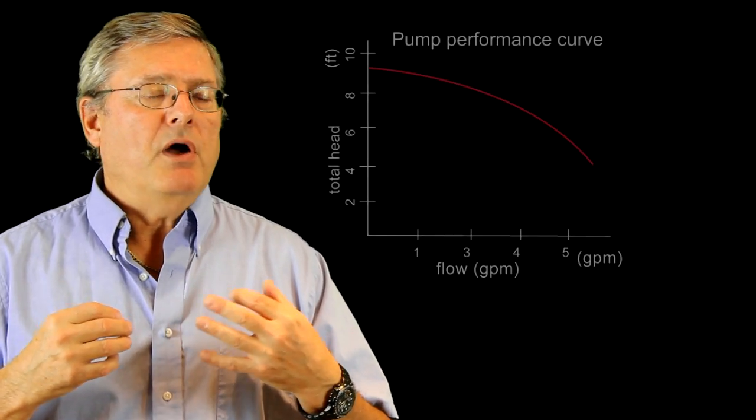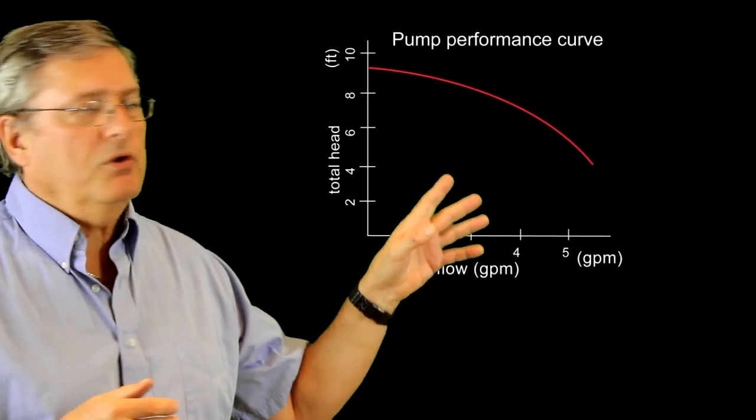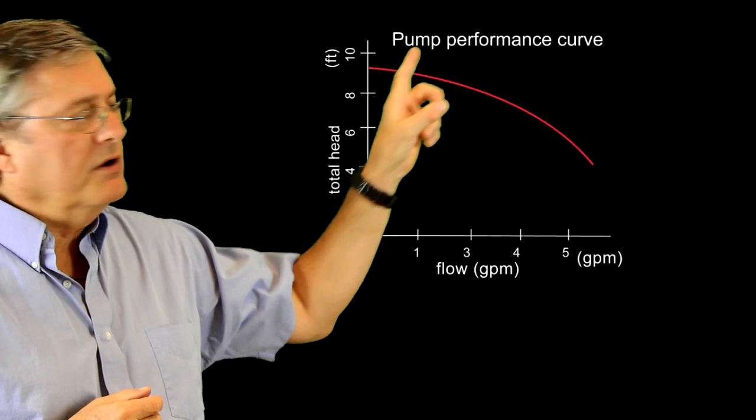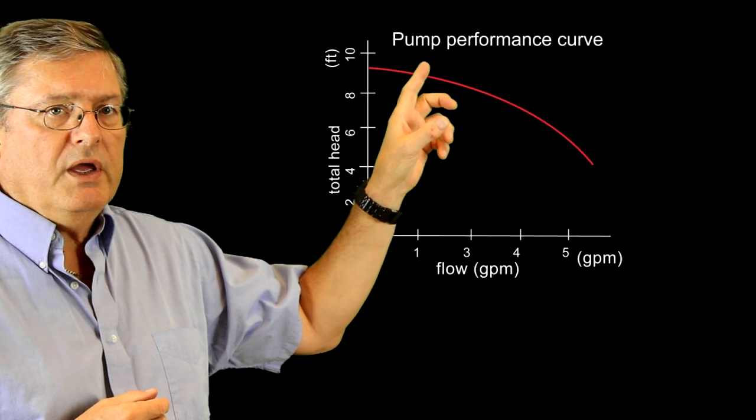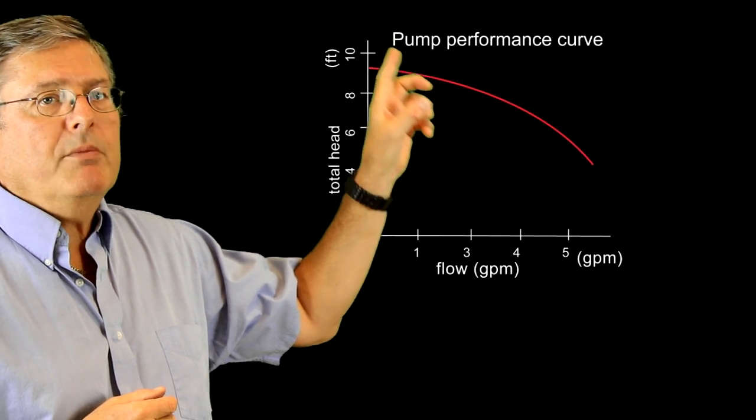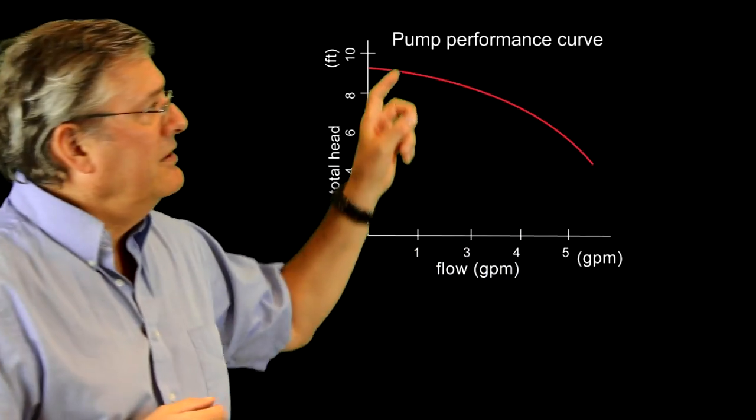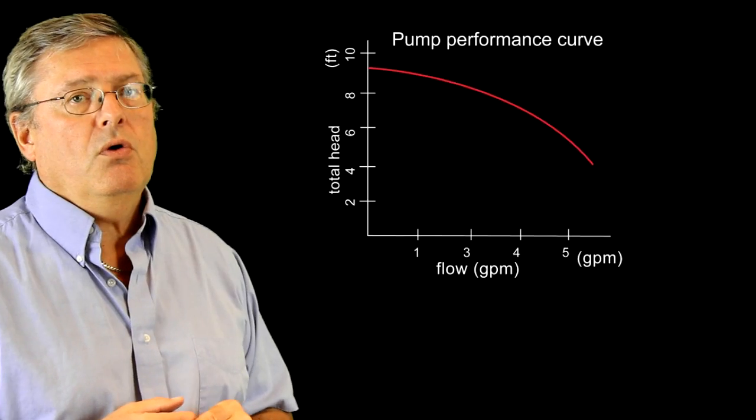So the thing about centrifugal pumps is they all have a very similar characteristic curve of head and flow. So you can see at this point here, at the low flow end or zero flow, we have the maximum head, and that's also called shutoff head. And at the other end we have the maximum flow and the lowest head.